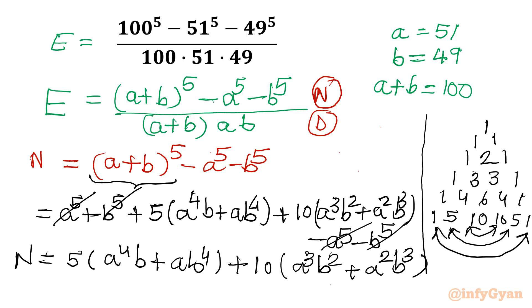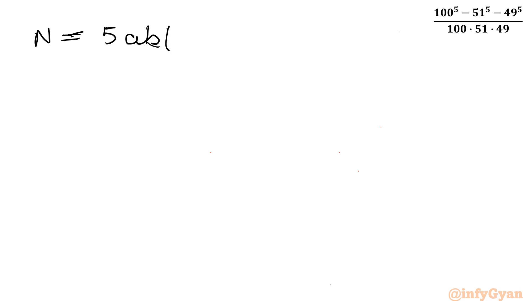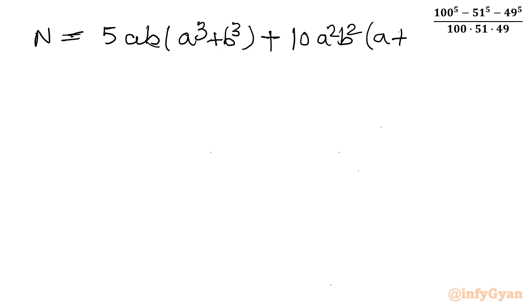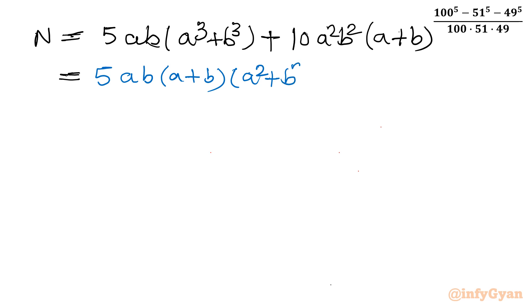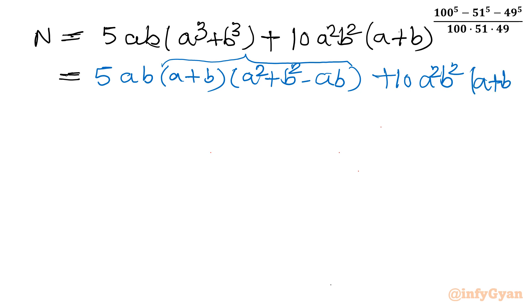So this is our numerator so far. Let us simplify further. We can take 5AB as common in the first bracket, leaving A cube plus B cube. And in the second bracket, common is A square B square, leaving A plus B. Now I will apply the identity: A cube plus B cube equals A plus B times A square plus B square minus AB. So I will write 5AB times A plus B times A square plus B square minus AB, plus 10 A square B square times A plus B.